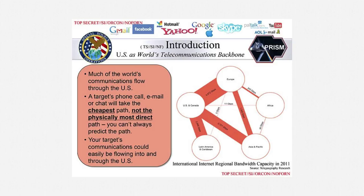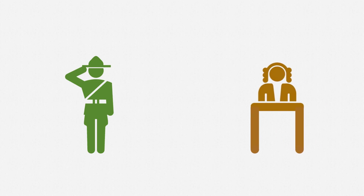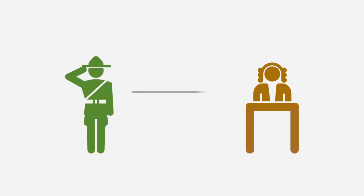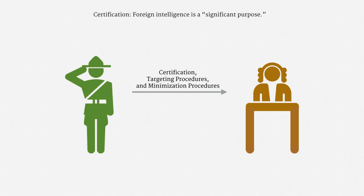Let me explain the procedure under Section 702. I want to emphasize that this procedure is very unusual — it's not like any of the other surveillance procedures that we've looked at. The Attorney General and the Director of National Intelligence submit a filing to the FISA Court. That filing includes a certification that, among other things, a significant purpose of the surveillance will be foreign intelligence.